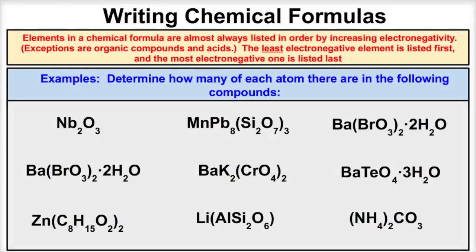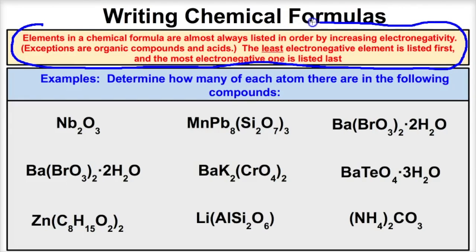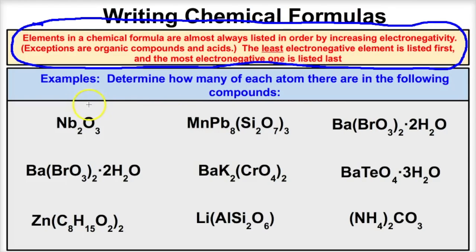When we're writing chemical formulas, you might wonder which element comes first. Typically, the element or atom that has the least electronegativity value comes first when writing chemical formulas. Make sure you're using a periodic table of elements that shows electronegativity values — the elements that are least electronegative are typically listed first in a chemical formula.